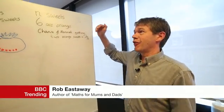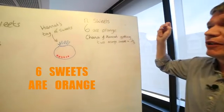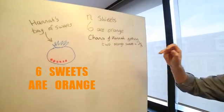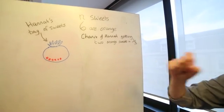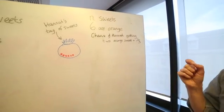So here's the information we've got. We're told that there are N sweets in Hannah's bag and that six of them are orange, and also that she takes two sweets out, one sweet which is orange and she eats that, and then she takes out another one and that's orange as well.